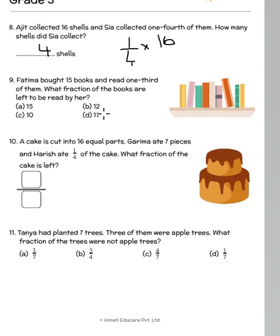Fatima bought 15 books and read one third of them. So she read one by three of 15 which is 15 divided by three is five books. If she has read five books how many more books does she have to read? 15 minus five is 10. So which of the options? So we have option number C.